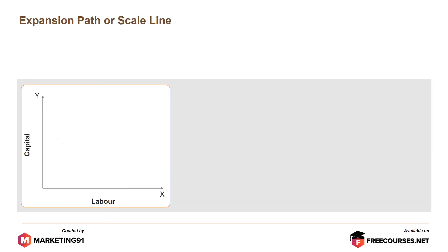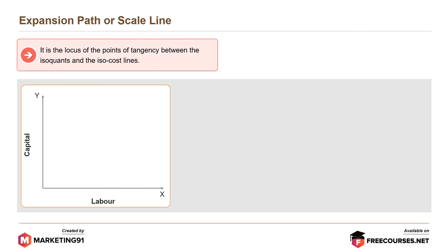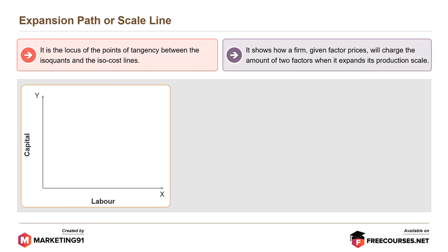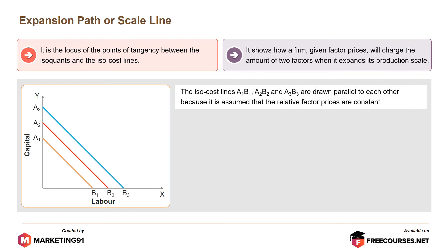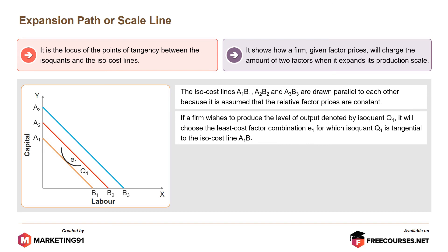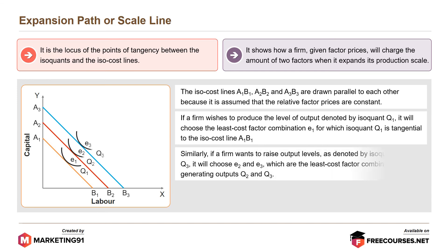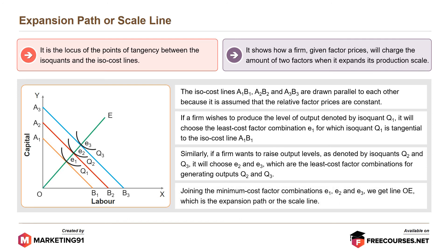Finally, moving on to the expansion path or scale line. It is a locus of points of tangency between the isoquants and the isocost line, showing how a firm, given factor prices, will change the amounts of two factors when it expands its production scale. The isocost lines A1B1, A2B2 and A3B3 are drawn parallel because relative factor prices are assumed constant. If a firm wishes to produce the output level Q1, it will choose the least cost factor combination E1, where Q1 is tangential to A1B1. Similarly, for outputs Q2 and Q3, it will choose E2 and E3. Joining E1, E2 and E3 gives line OE, which is the expansion path or scale line.